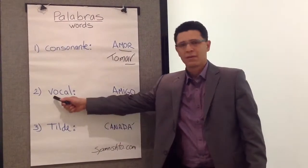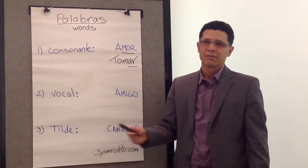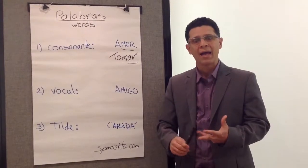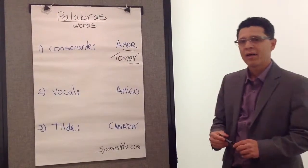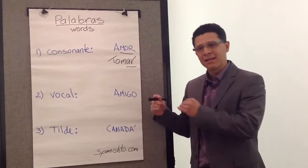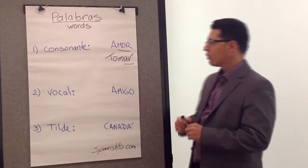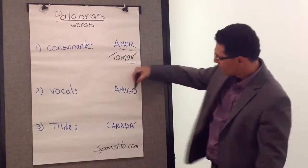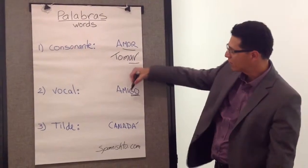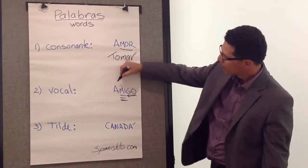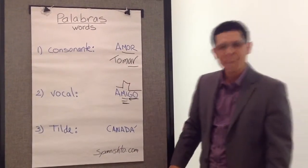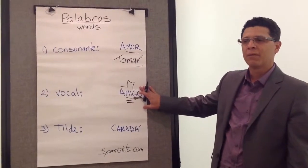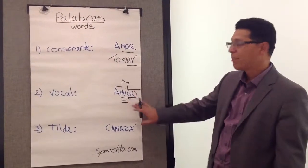Rule number two: the rule of the vocal — the vowel rule. If the word ends in a vowel, for example A, E, I, O, U, then all you have to do is stress the second-to-last syllable. For example, in the word amigo, you stress the second-to-last syllable: amigo. It's important to know that 70% of words in Spanish are pronounced like amigo.